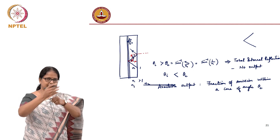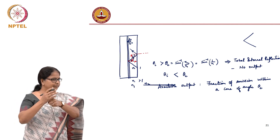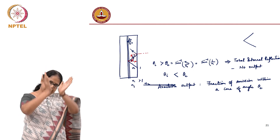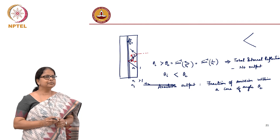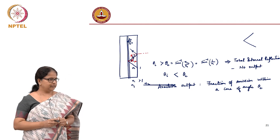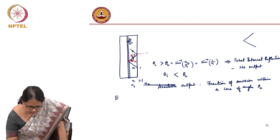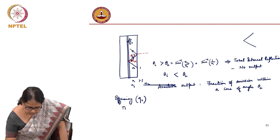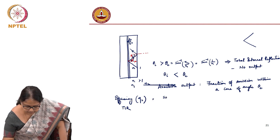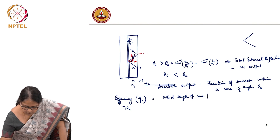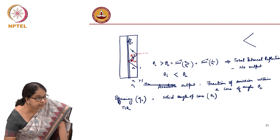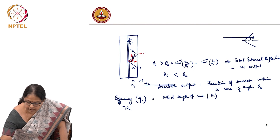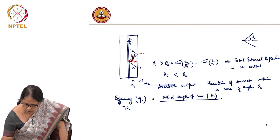If it is emitting in all directions, the full solid angle is 4π (a sphere). If it is emitting only in a specific direction, that corresponds to the solid angle of a cone. So the efficiency eta_2 due to total internal reflection is the ratio of the solid angle of a cone of half-angle theta_c to 4π.